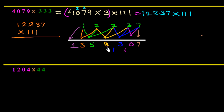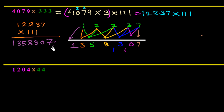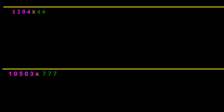So the answer is 1,358,307. That is the result of 4079 × 333. In this way we can multiply numbers with a series of similar digits. Now we see one more example: 1204 multiplied by 44.